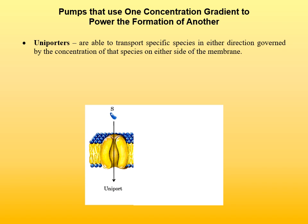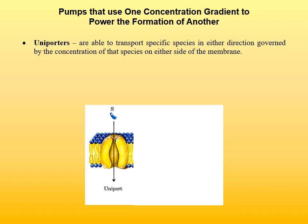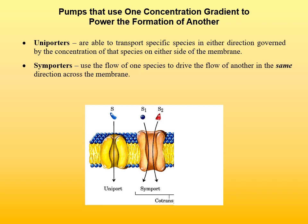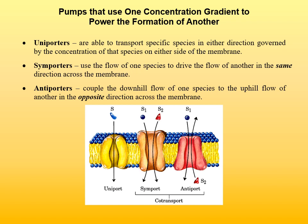Secondary transporters are ancient and common to eukaryotes, bacteria, and archaea. They are classified as uniporters — able to transport a specific species in either direction governed by concentration — symporters, which use the flow of one species to drive the flow of another in the same direction, and antiporters, which couple the downhill flow of one species to the uphill flow of another species in the opposite direction across the membrane.